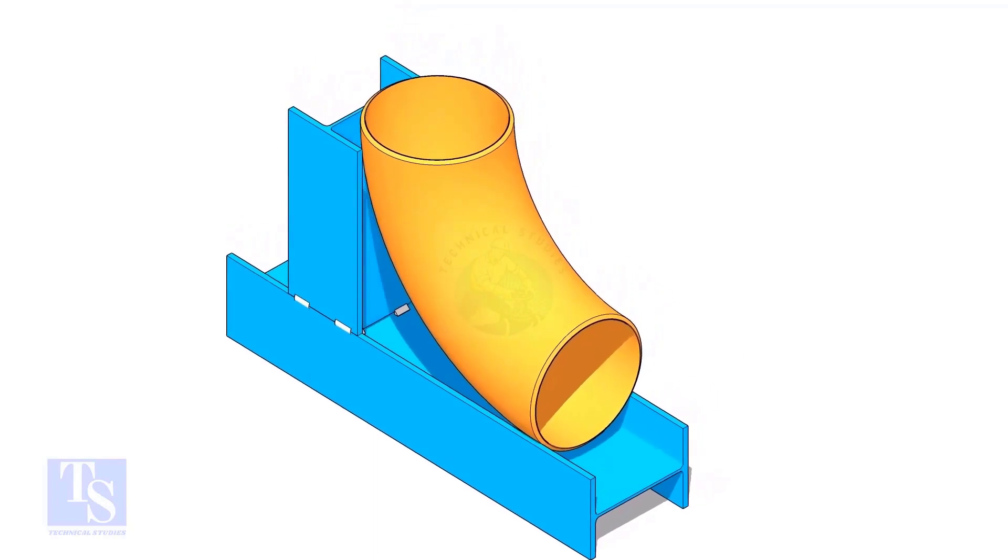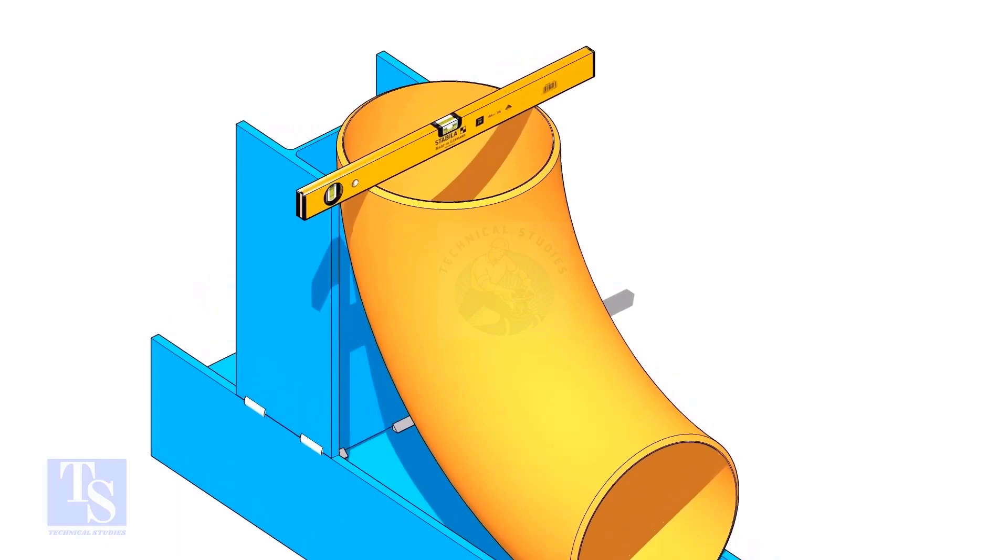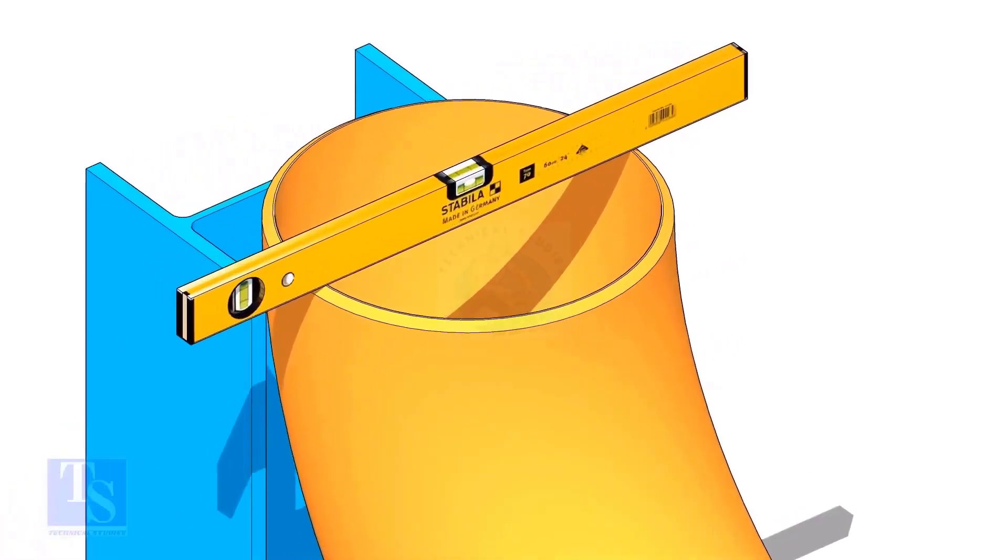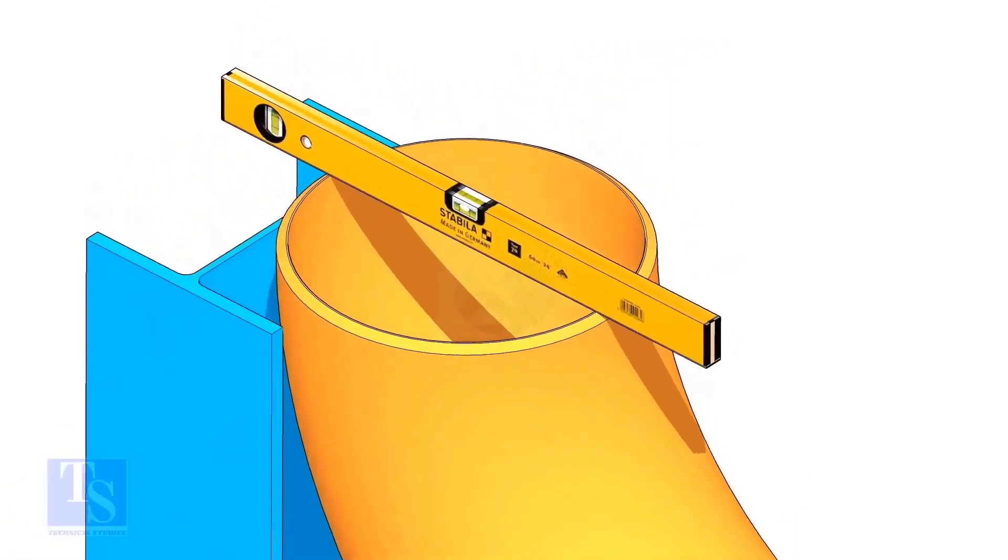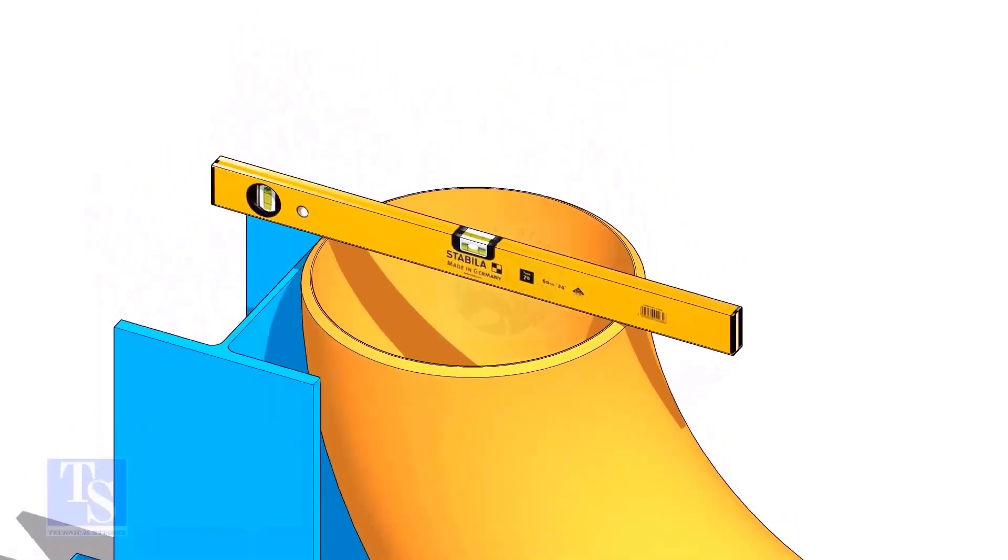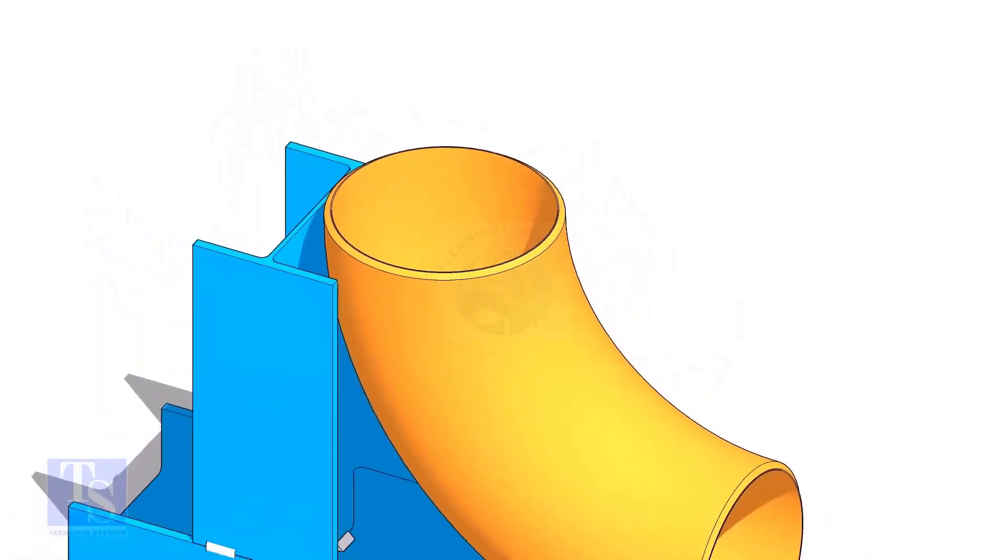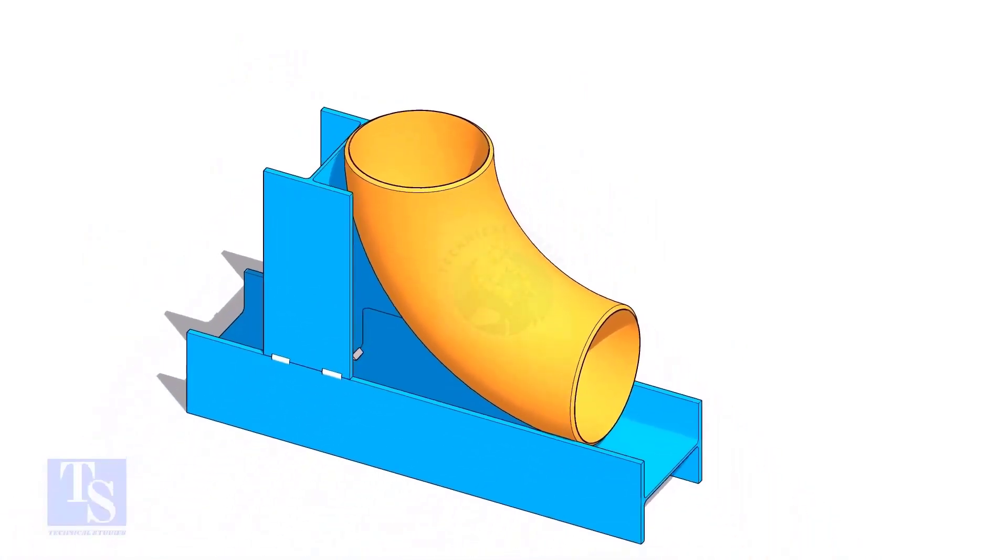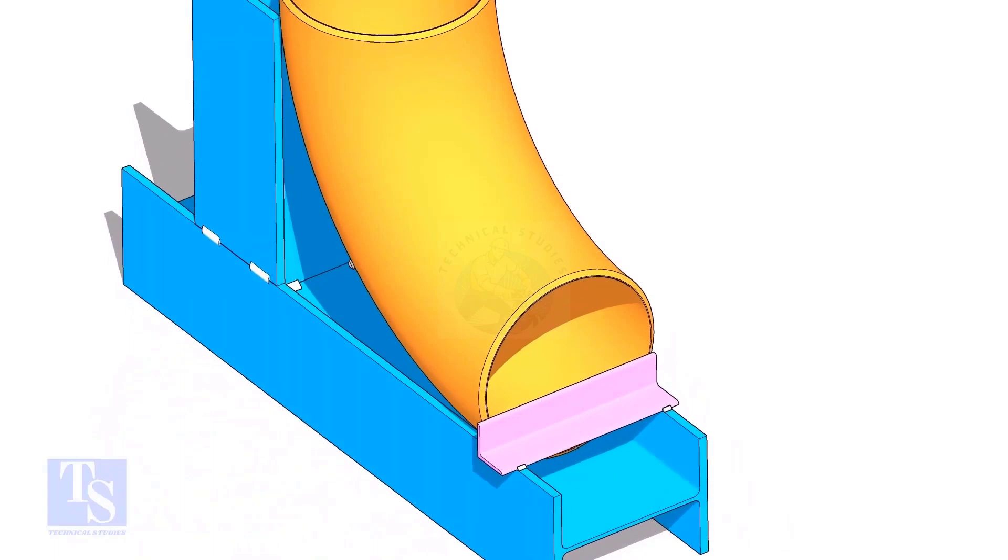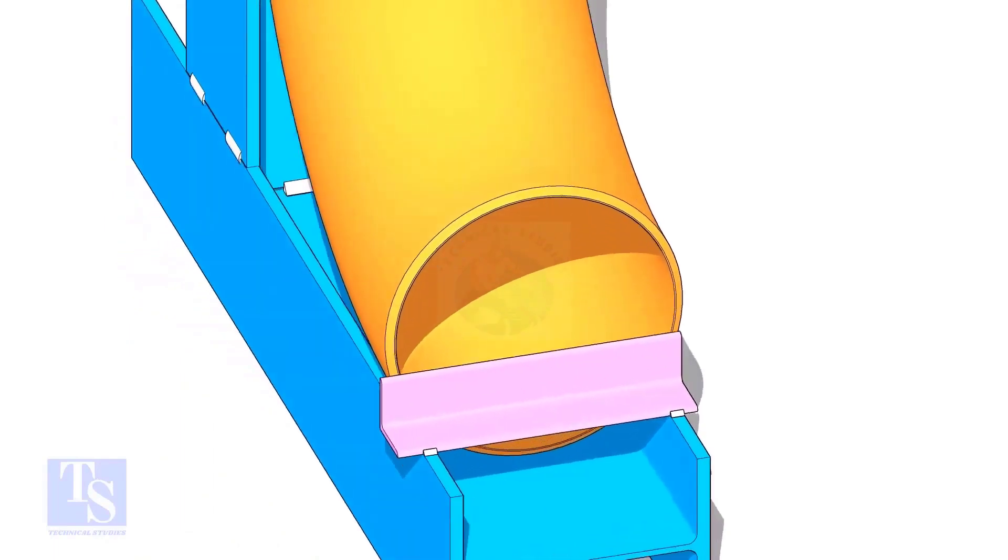Put the elbow in the jig. Level the top face of the elbow on both ways. Tack weld a piece of angle bar or a piece of a plate at the bottom side of the jig to arrest the elbow.